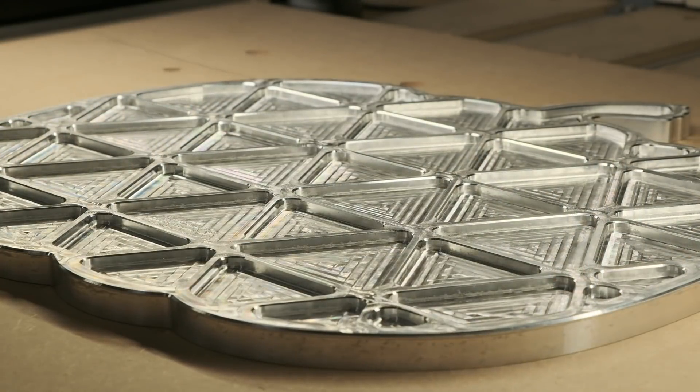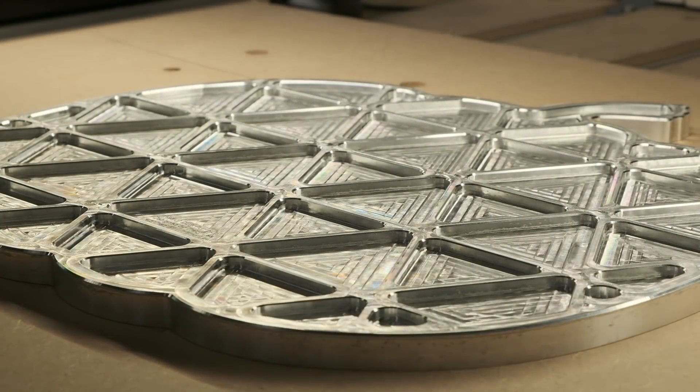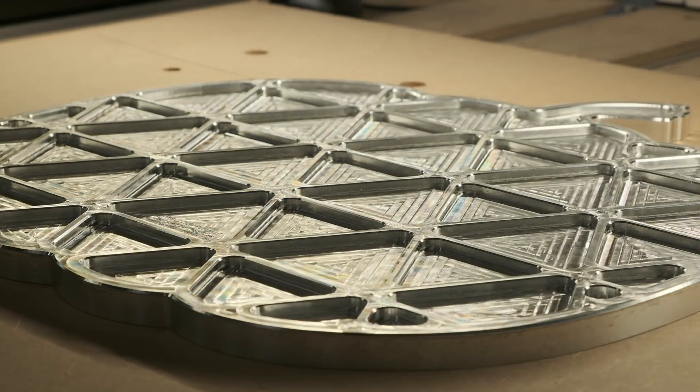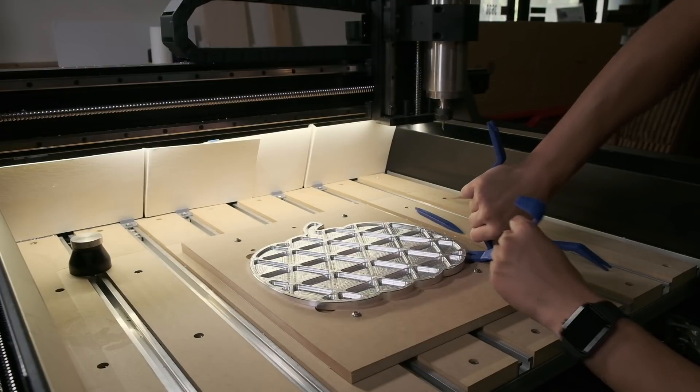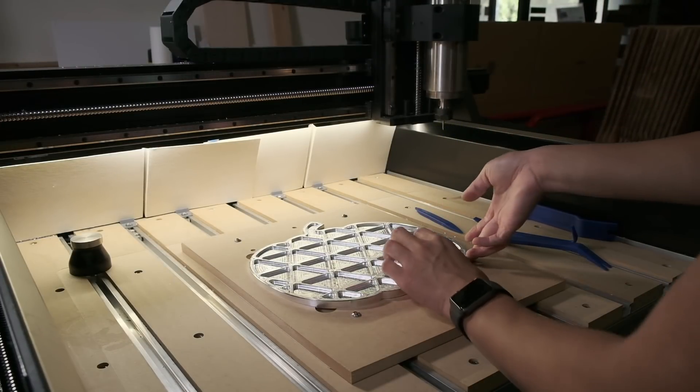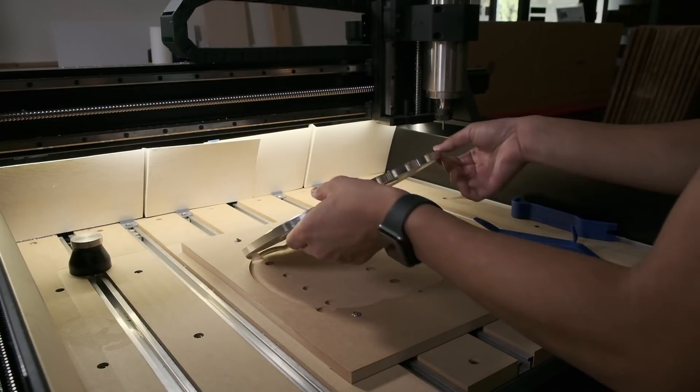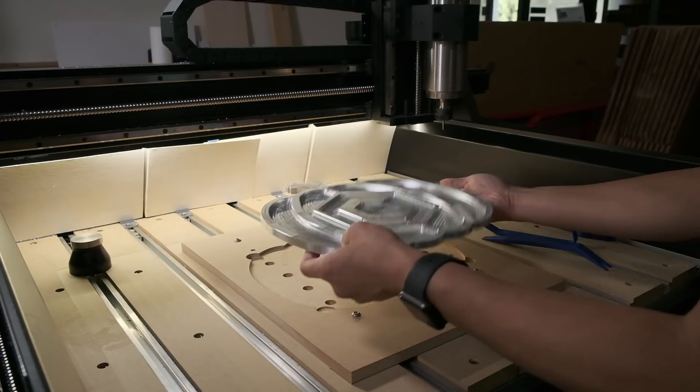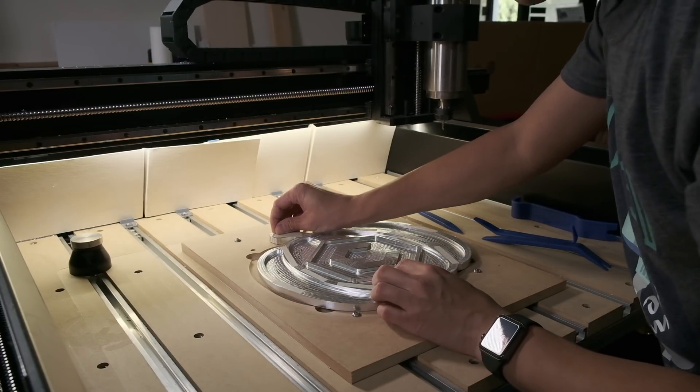And with that engraving done, the heavy-duty pumpkin was complete. And let me tell you, this thing is incredibly satisfying to hold. It clocks in at 714 grams, or just under 1.6 pounds. My only regret is in not trying to make this pumpkin even lighter by chasing higher tolerances and thinner walls.